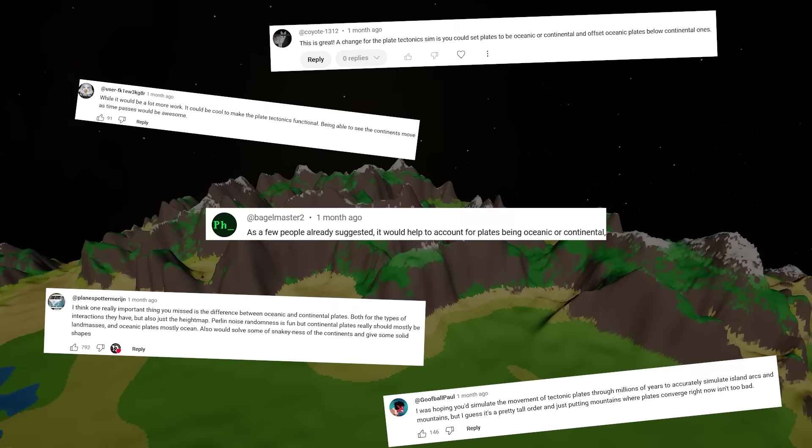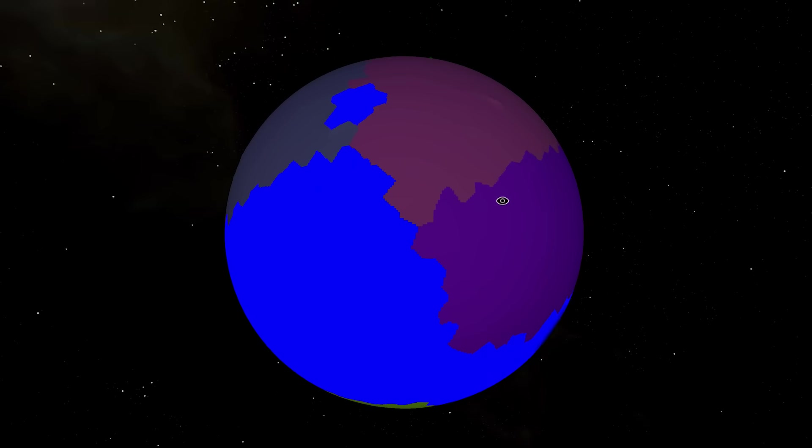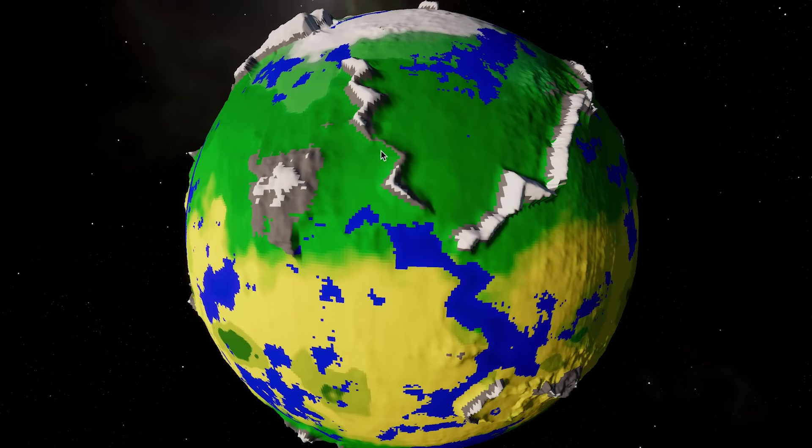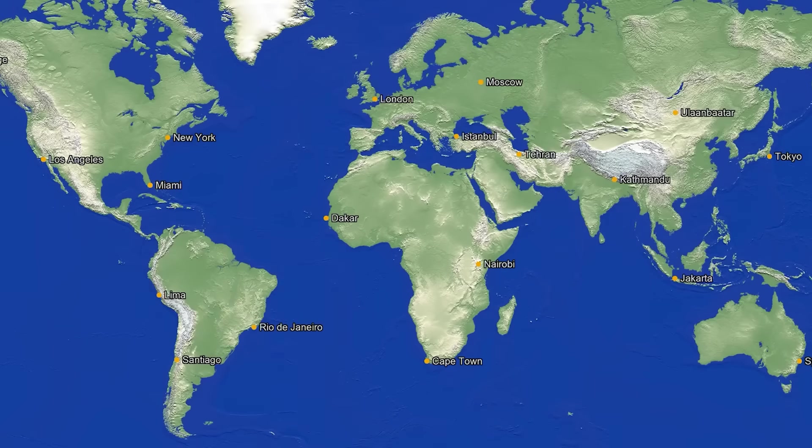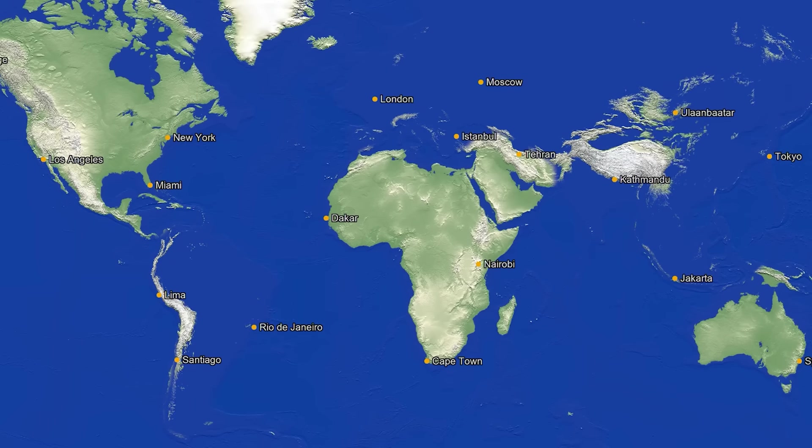But first, you guys suggested some changes to my tectonic plate simulation, like splitting up the plates into oceanic and continental. As you can see from Earth's map, a lot of plates are either entirely land or entirely ocean. I increased the overall amount of land on our planet, and now I can just shift all the land on our oceanic plates downwards, so what used to be mountains now shows up as islands.